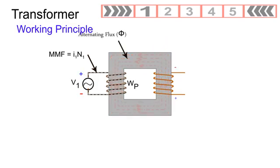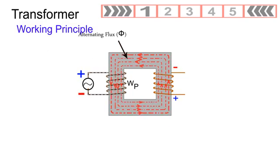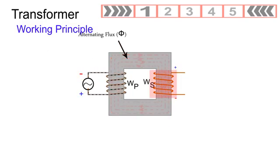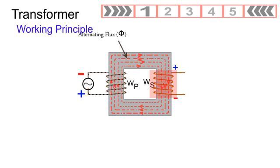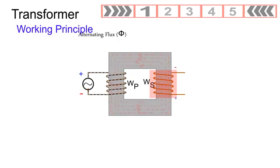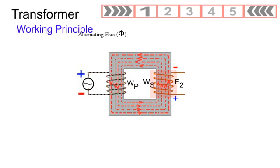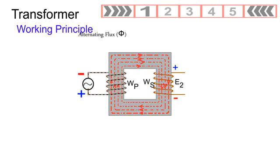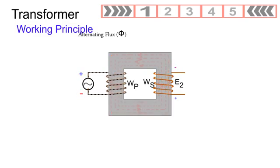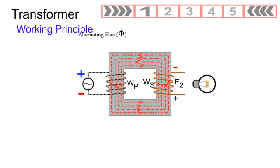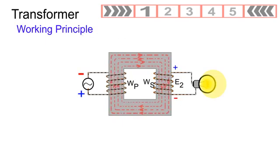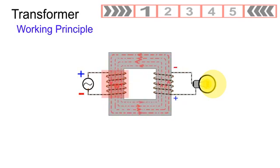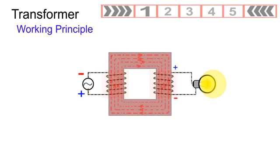This alternating flux links the turns of the secondary winding. As this is alternating, it induces in the winding an EMF of the same frequency as the flux. Because of this induced EMF, the secondary winding is capable of delivering current and energy. Therefore, the energy is transferred from the primary to the secondary by means of magnetic flux.